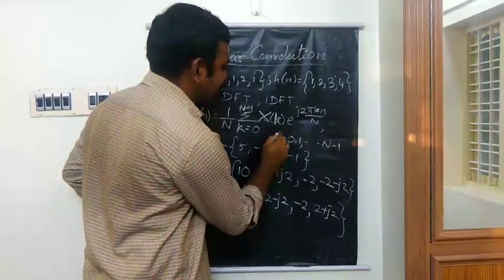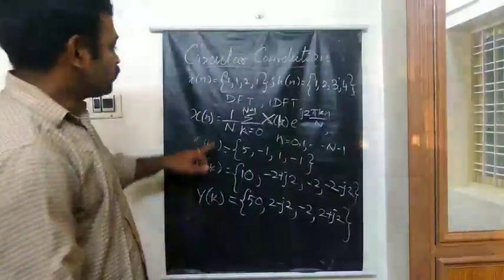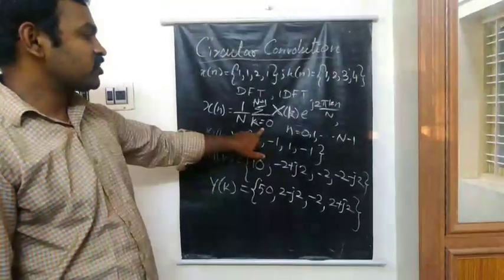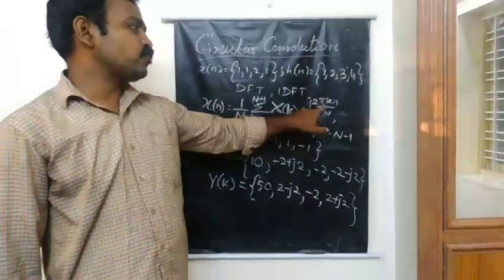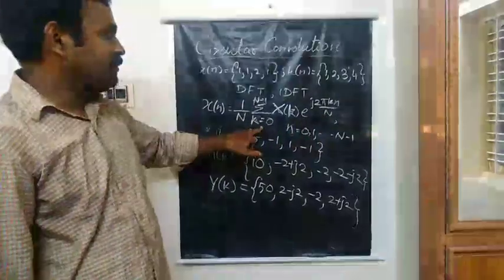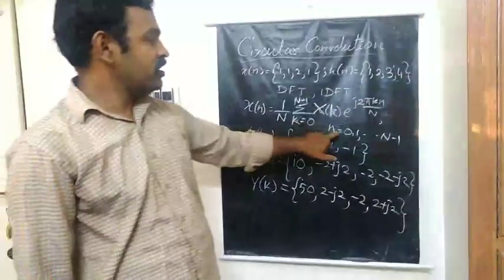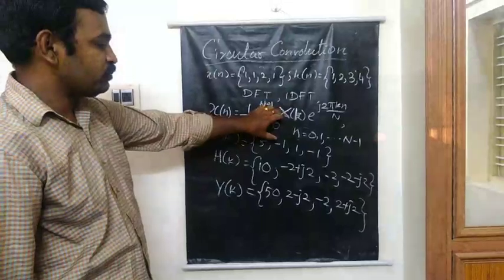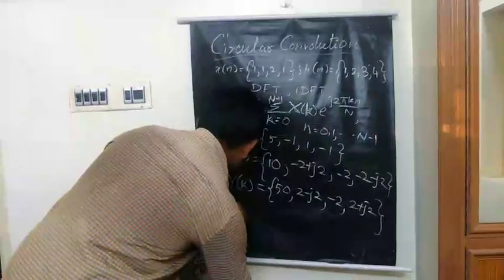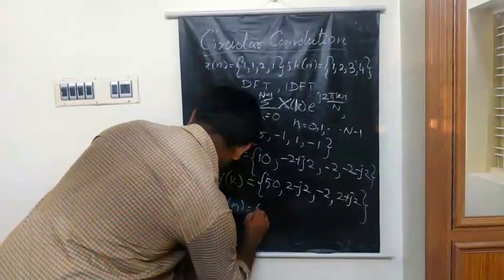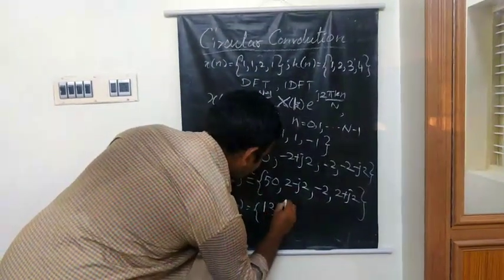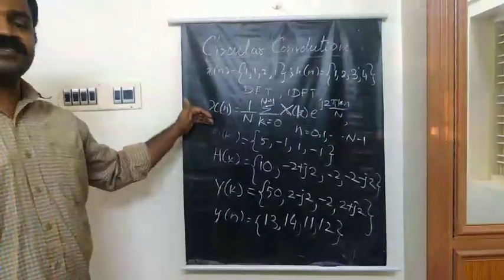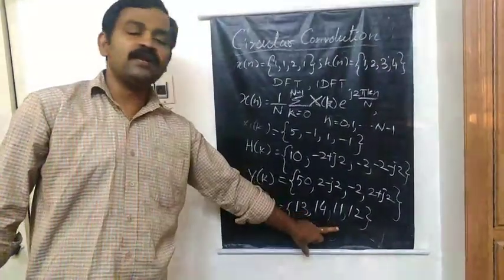In this case it is Y of k, substitute the values, e power j 2π kn by N. And here n varies from 0 to N minus 1. So if you use Y of k and substitute and simplify the formula, you will get Y of n. Our Y of n becomes 30, 40, 11, 12.